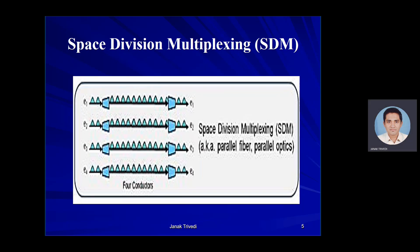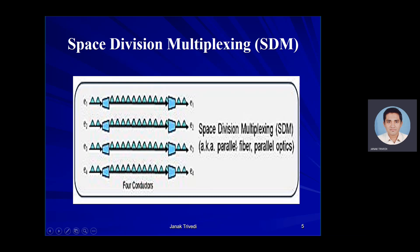Space Division Multiplexing (SDM) is a technology that utilizes the spatial dimension to simultaneously deliver different data streams by creating parallel spatial channels. SDM, more commonly known as parallel optics or parallel fiber, is a way of adding capacity simply by adding one or more optical fibers into the composite link. A lane in this scenario is physically another fiber strand. It is an alternative to OTDM, where signals merge each in a time slot on the same fiber.